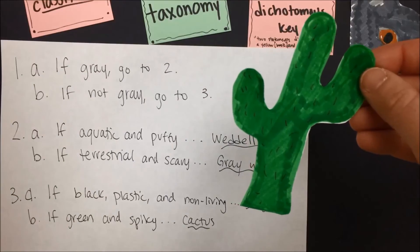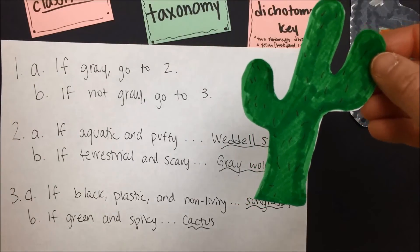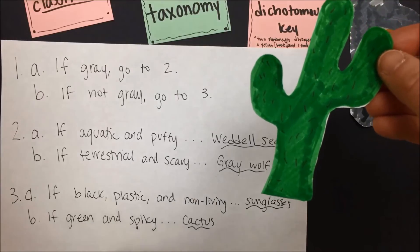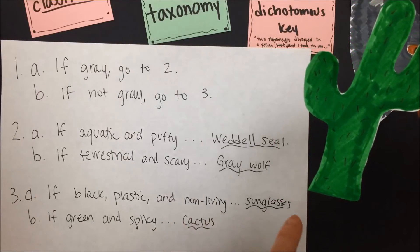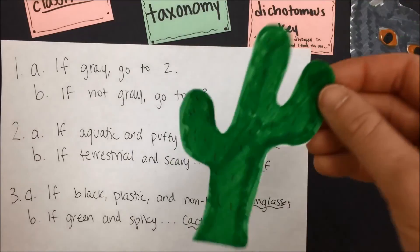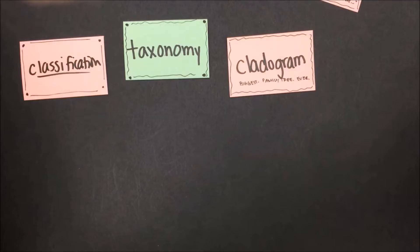Here's another organism: if gray, go to two; if not gray, go to three. If black, plastic, and non-living — sunglasses. If green and spiky — cactus. This was an easy one, but you get the idea of how a dichotomous key works.